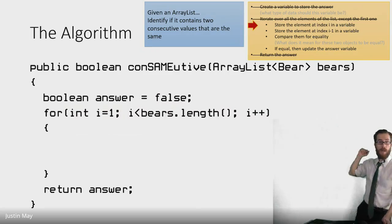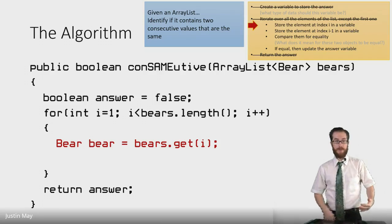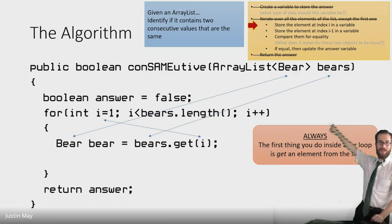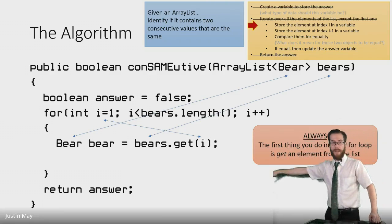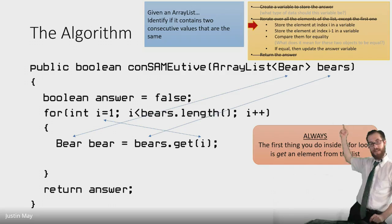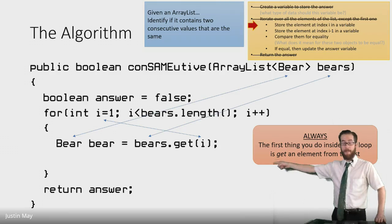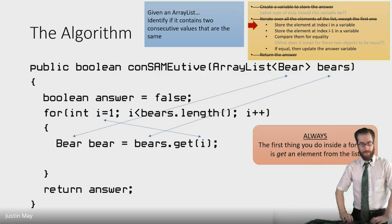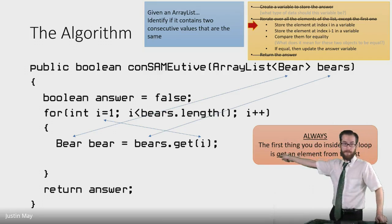The next step is to store the element at index i in a variable. This is the first thing you always do inside a for loop: create a variable and get the value from the list and store it in that variable. The type of this variable is the same as the type of the list — it's a list of bears, so I'm making a bear variable. The name of the list is bears, so I do bears.get(i). I called the variable 'bear' because that's the singular version of the list name. Notice the casing: capital-B Bear is the type, lowercase-b bear is the variable name — Java is case sensitive.